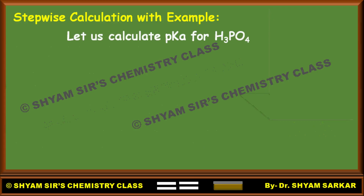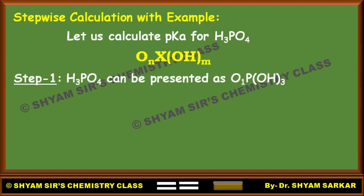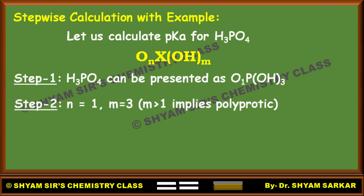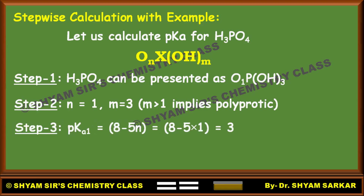Let us see how we can calculate pKa values with an example. First example: H₃PO₄. You have to first represent this in the form of O_N X(OH)_M. Step 1: H₃PO₄ can be represented as O¹P(OH)₃. Step 2: Determine N value — from this we can say N equals 1 and M equals 3. M equals 3, which is greater than 1, meaning this acid is a polyprotic acid. Step 3: pKa1 = 8 minus 5N. Putting in N equals 1, pKa1 equals 3. These are the three simplest steps to determine pKa using Pauling's rule.